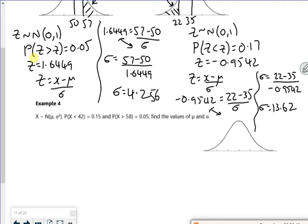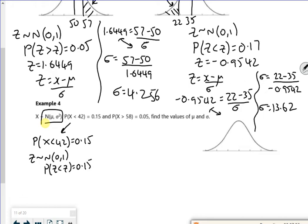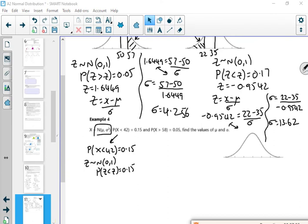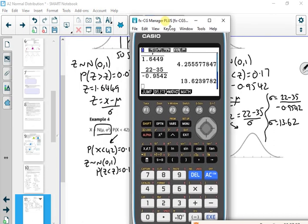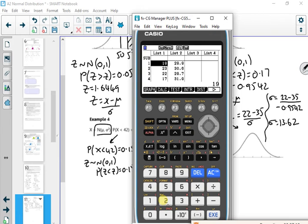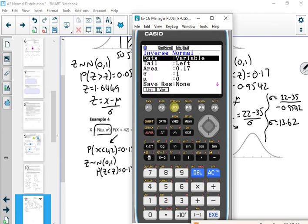Right, so we've got, we don't know sigma or mu this time. Yay. So let's have a look at this one then. For less than 42 is 0.15. So if I change it to the z, I want the probability that z is less than z is 0.15. Right, so if I go to my calculator, I'm doing menu 2, F5, F1, inverse.